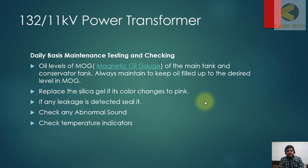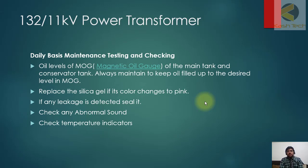Welcome again. Now we will discuss the next topic: maintenance and testing of transformers. Oil level in the magnetic oil gauge of the main tank and conservator tank should always be maintained — keep oil filled up to the desired level. In your routine check, keep checking the oil level in the transformer.